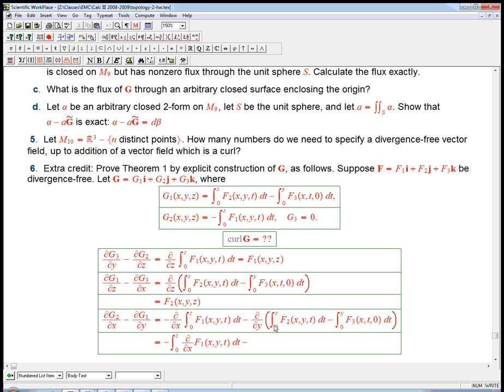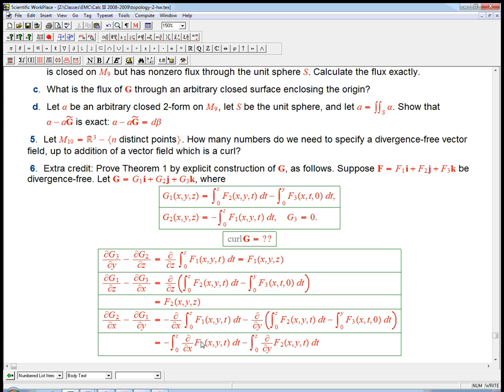d by dy—same deal. This is going to be the integral from 0 to z, and the d by dy is going to come in here. d by dx of f₁, d by dy of f₂—that's very interesting. And then d by dy, where the y dependence is in the integral, that's where FTC comes in. We're going to get plus f₃ of x, y, and then the other thing is a 0.